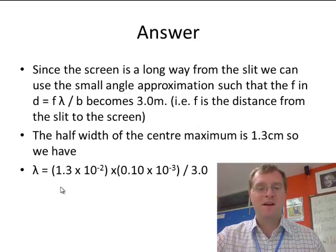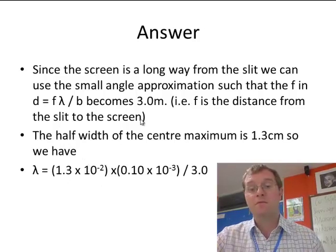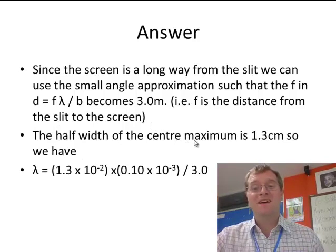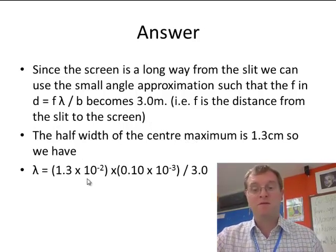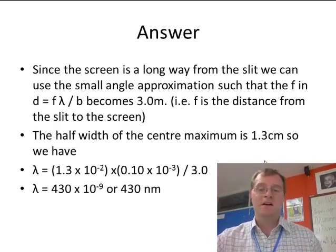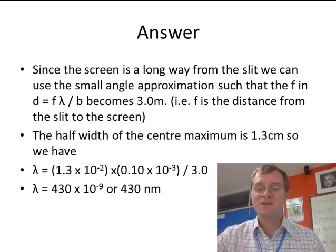Therefore, we can work out what the wavelength is from known values which we've been given. We know what D is, we know what B is, we know what F is. So if I put all these numbers in, I get 430 nanometers, which is the wavelength of the light which produced this situation.